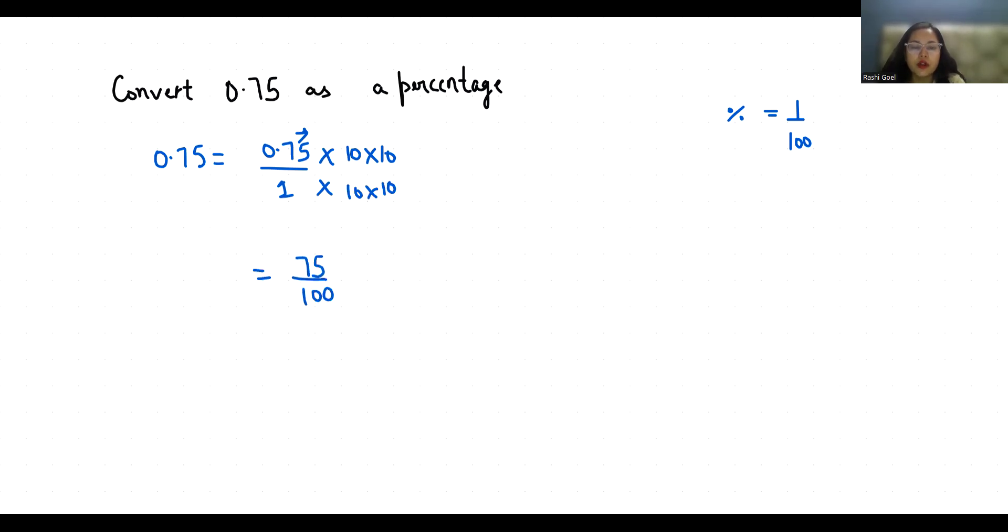Now to convert into percentage, we need 100 in the denominator. So we can write 75 by 100 as 75 times 1 by 100. Now we can replace 1 by 100 with this sign. So 0.75 in terms of percentage is 75%. I hope it's clear and you find it useful.